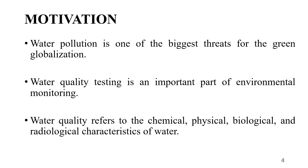The water quality parameters: pH measures the concentration of hydrogen ions and indicates whether the water is acidic or alkaline. Pure water has a pH value of 7. Lower than 7 is acidic and higher than 7 is alkaline. The range of pH is 0 to 14. Turbidity measures the number of suspended particles in water. Higher the turbidity, higher the risk of diarrhea, cholera and other waterborne diseases. Lower the turbidity, the more clear the water.